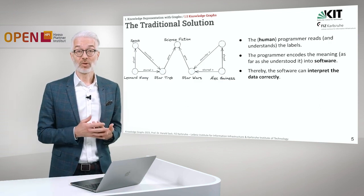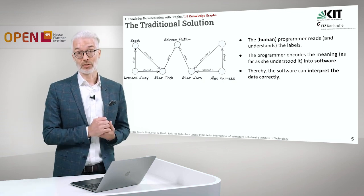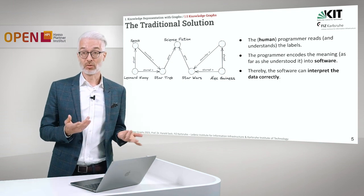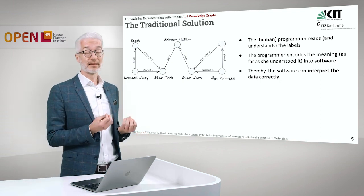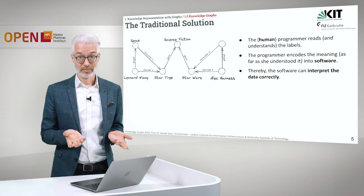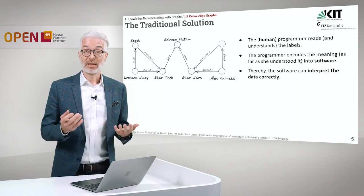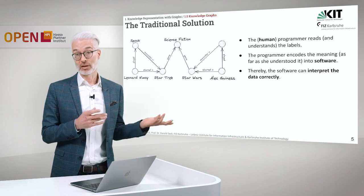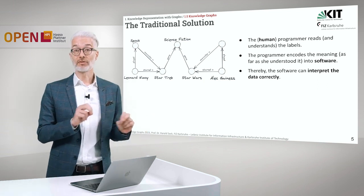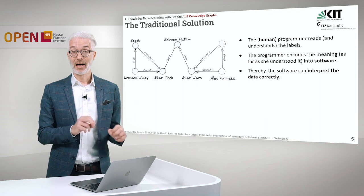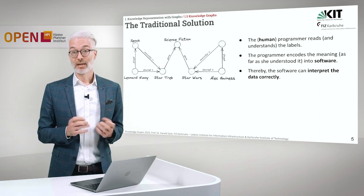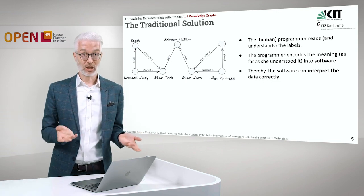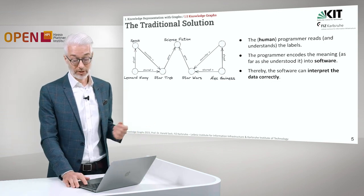So how does this work in the traditional solution? In the traditional solution, the human — usually the programmer — reads and understands the labels. What happens then is that the programmer encodes the meaning, as far as she understood it, into the software by hand, hard-coded. Thereby, the software can then interpret the data and the graphs correctly. That's the traditional solution.